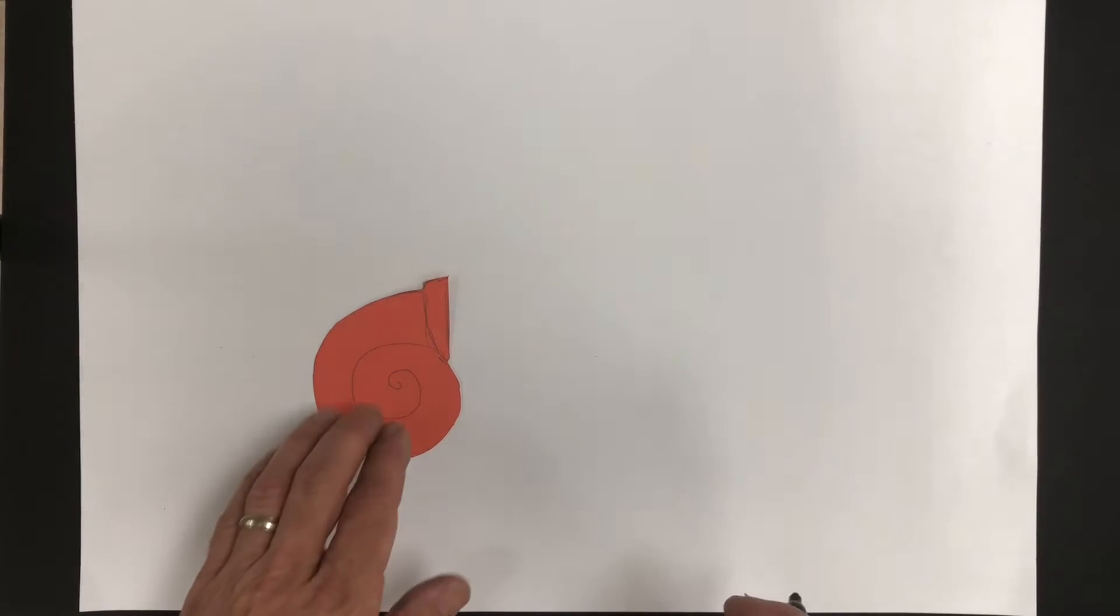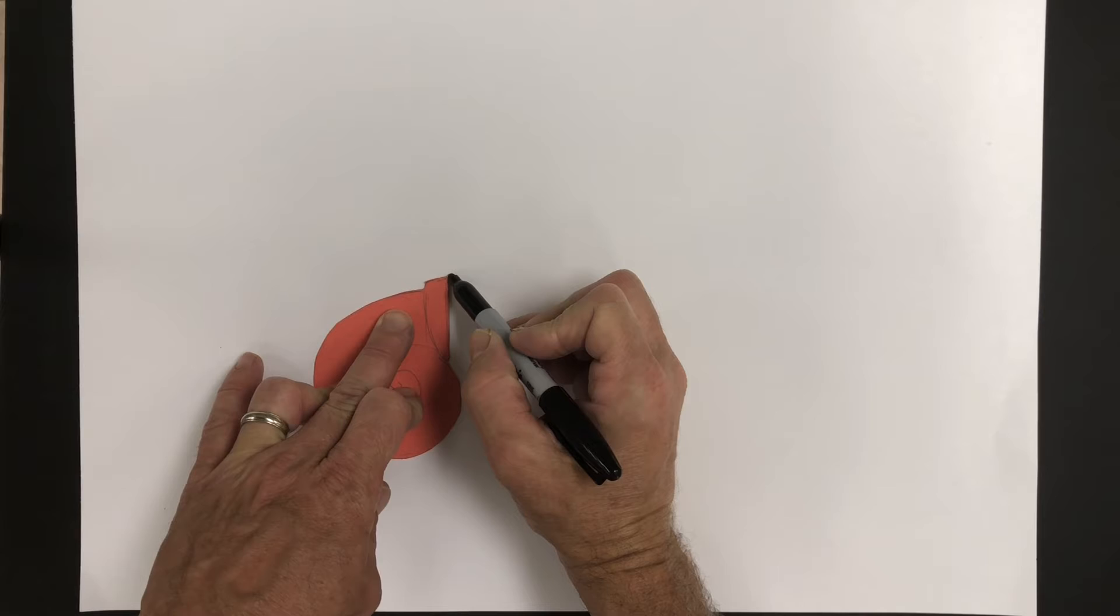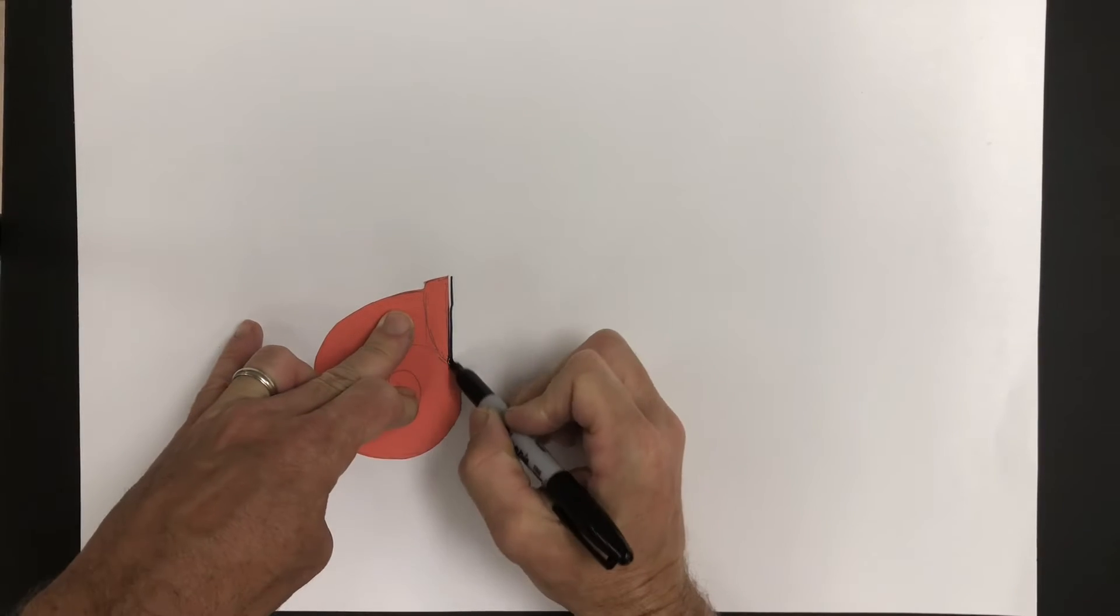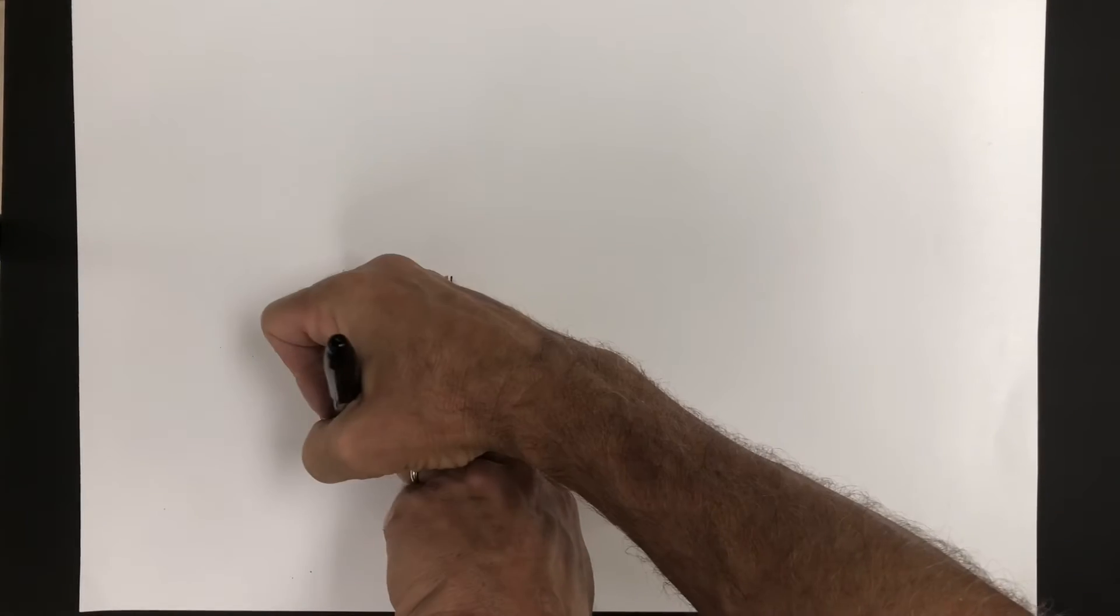To begin the drawing, take a cardboard template and trace that for the shell of the hermit crab.